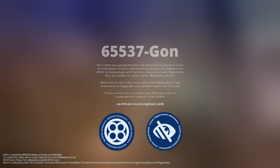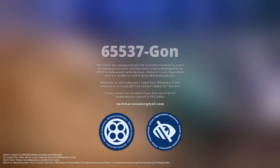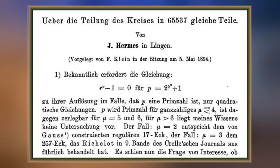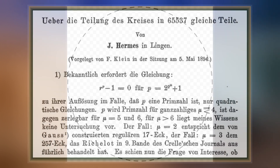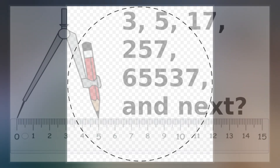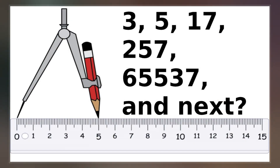In geometry, a 65,537-gon is a polygon with 65,537 sides. The sum of the interior angles of any non-self-intersecting 65,537-gon is 11,796,300 degrees. The area of a regular 65,537-gon is approximately that of its circumscribed circle.